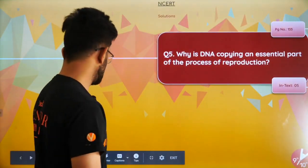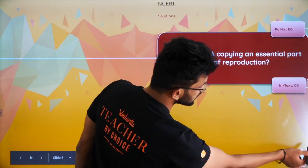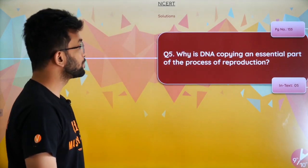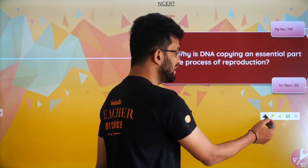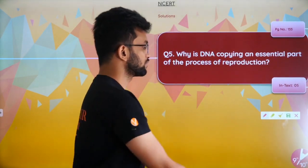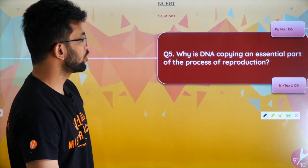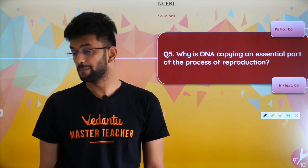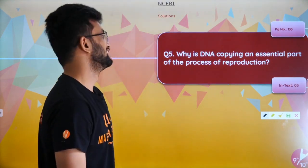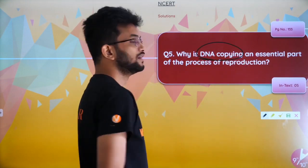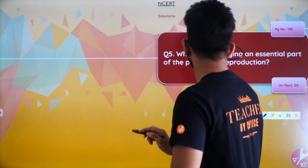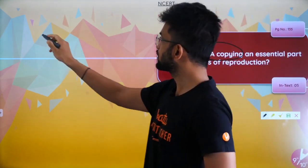Let's do the questions. The first question is: Why is DNA copying an essential part of the process of reproduction? Pause this video and try to write the answer on your own. Come on — DNA copying is important for reproduction. Why? You should write this out.